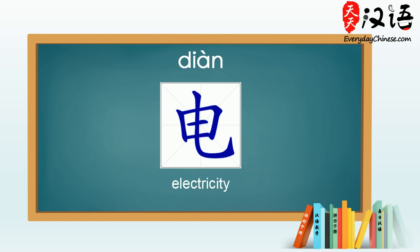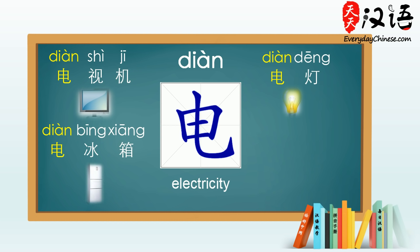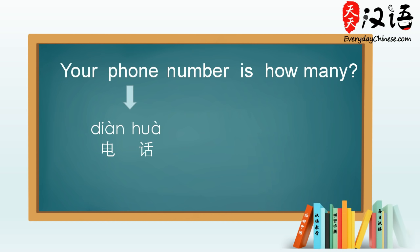For example: 电视机 (television). 电灯 (electric light). 电脑 (computer). The Chinese word for number is 号码. 号码.